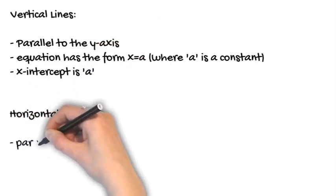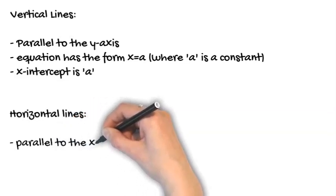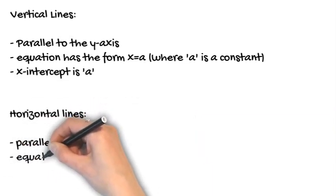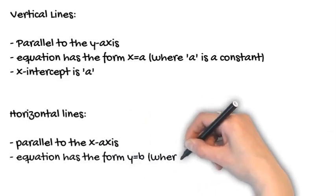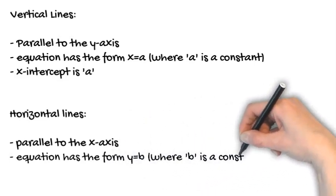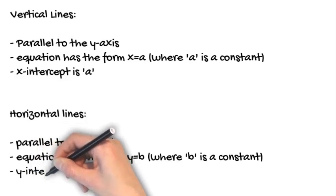For horizontal lines, they're parallel to the x-axis. Their equation has the form y equals b, and b is a constant or just any number, and the place where it crosses the y-axis is b.